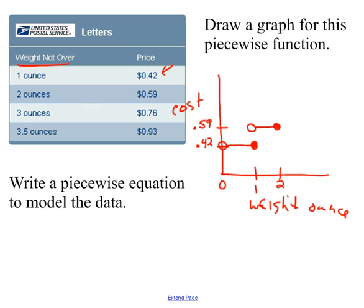Continuing in this manner: anything a little bit over two ounces all the way to three ounces costs 76 cents — open circle at two, closed at three. Then up to 3.5 ounces, anything between three and 3.5 ounces will cost 93 cents.